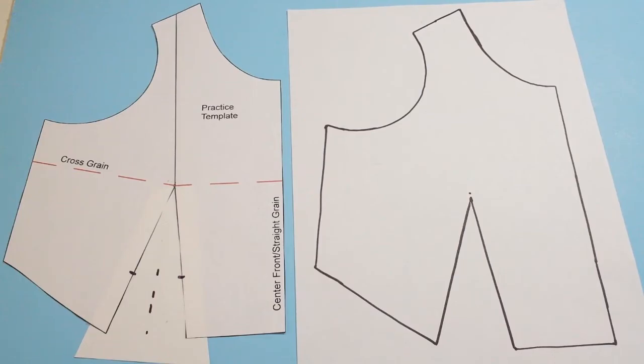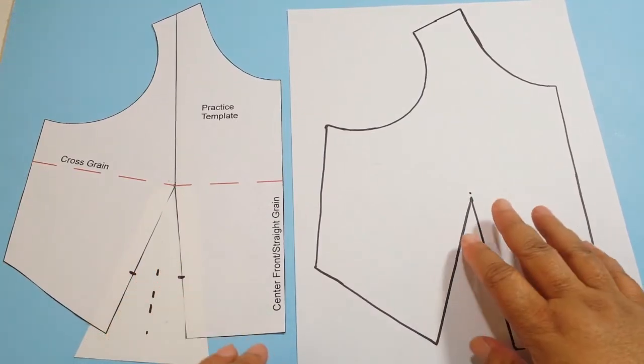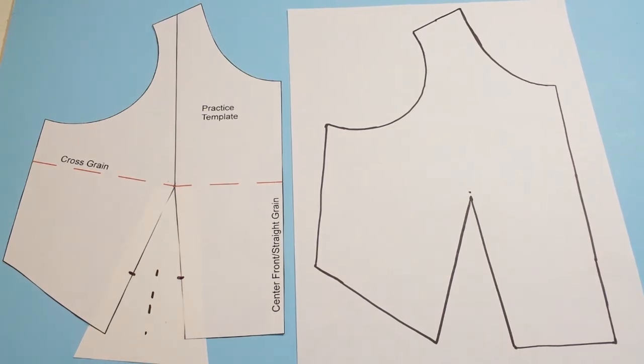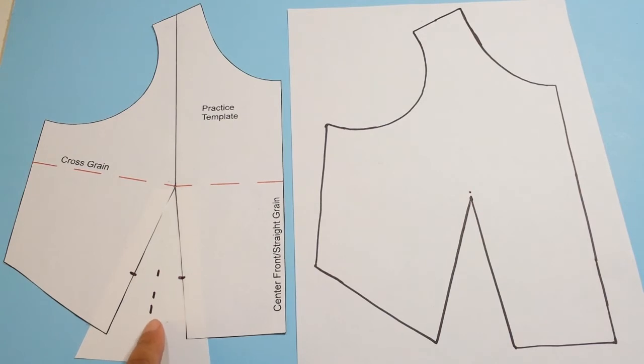So these are both my pieces side by side. This is the slash method, this is the pivot method. Changing the dart into a tuck is done the same way regardless of which method you used. The only thing you have to do differently is with the slash method you have to fill your dart in with paper. With the pivot method you do not.